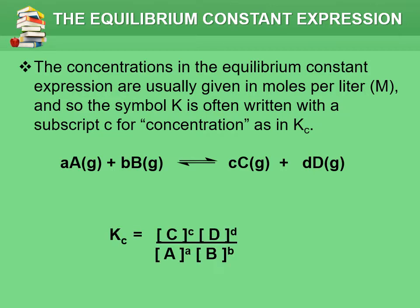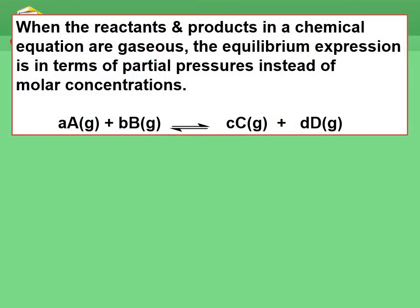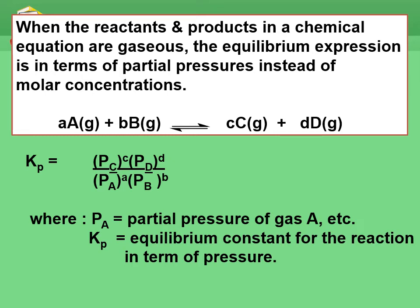Here is the formula of the equilibrium constant Kc again. When the reactants and products in a chemical equation are gases, the equilibrium expression is in terms of partial pressures instead of molar concentrations. When we have the partial pressure for each individual reactant and product from the balanced equation, we can use the same formula using partial pressure. So, the equilibrium constant Kp is the pressure of C to the power of c, multiplied by the pressure of D to the power of d, divided by partial pressure of A to the power of a, times partial pressure of B to the power of b. Kp is the equilibrium constant for the reaction in terms of pressure.